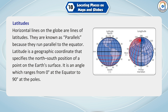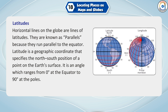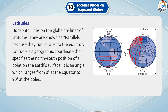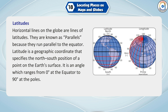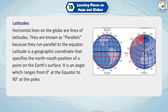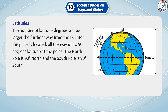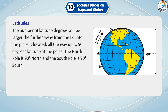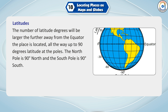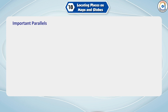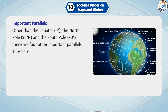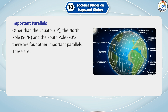Latitudes: Horizontal lines on the globe are lines of latitudes, known as parallels because they run parallel to the equator. Latitude is a geographic coordinate that specifies the north-south position of a point on the Earth's surface. It is an angle ranging from 0 degrees at the equator to 90 degrees at the poles. The north pole is 90 degrees north and the south pole is 90 degrees south.